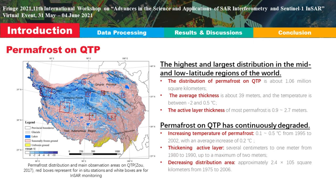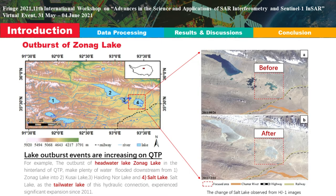Variations in hydrothermal conditions cause the top of permafrost soil to freeze, thaw, or uplift to the surface. Affected by increasing mean annual ground temperature over the past several decades, permafrost degradation is generally occurring on the Qinghai-Tibet Plateau. Meanwhile, lake outburst events are increasing on the plateau.